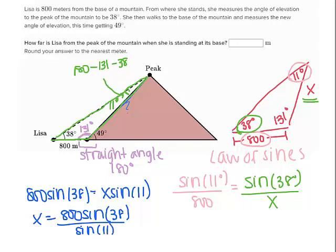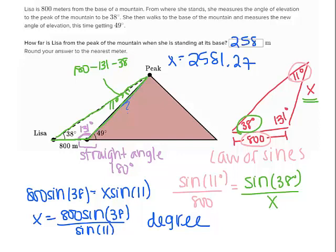Make sure your calculator is in degree mode when you type this in. When you're finished, you should get that x equals 2,581.27 meters. The question told you to round to the nearest meter, so the answer is 2,581 meters. If you had trouble getting that answer in your calculator, just ask your teacher for help.